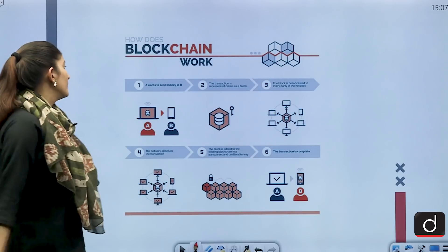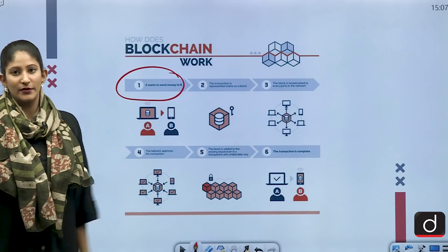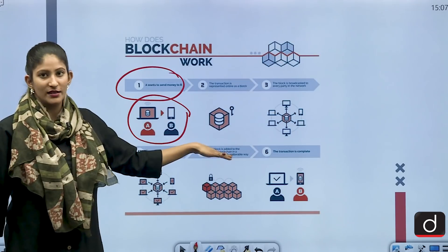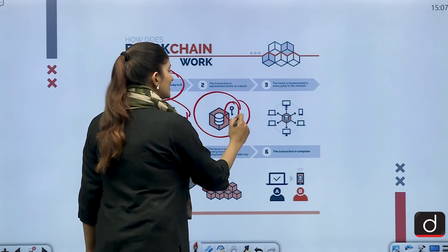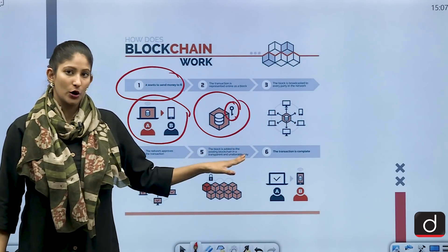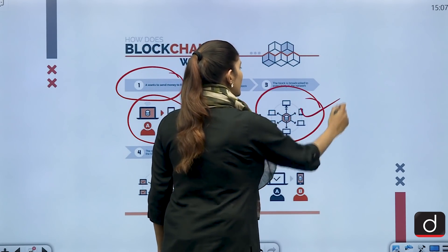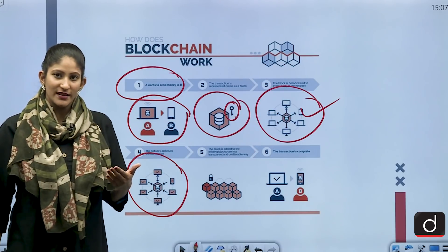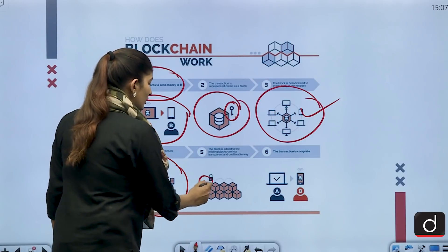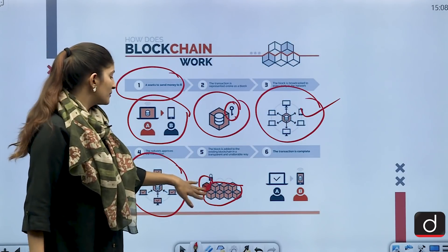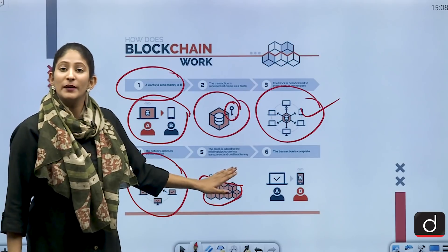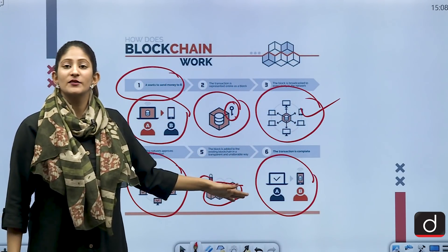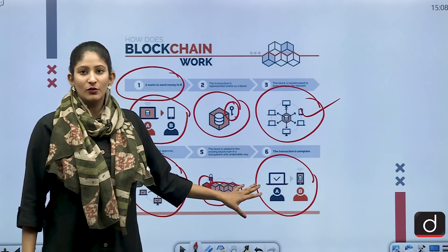To understand blockchain technology, consider this diagram: A wants to send money to B. A sends money through the internet via blockchain technology, and a block gets created. This block contains information that is encrypted — that means the information has been locked. Once locked, it gets broadcasted to every party connected through that network. Once the network approves and validates the transaction, the block is added to the existing chain of blocks, and this chain cannot be distorted or tampered with. The transaction completes, and the information is always stored as-is — that is the beauty of blockchain technology.